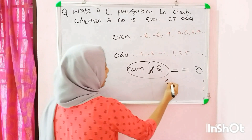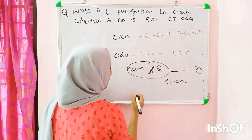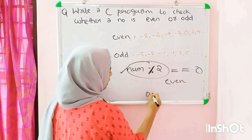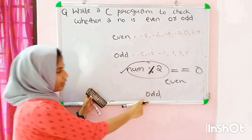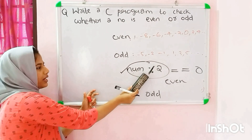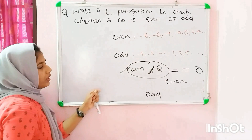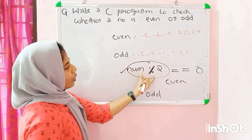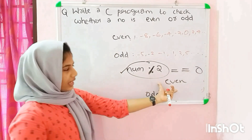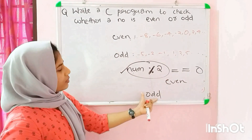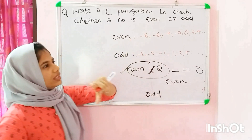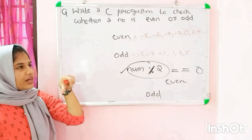We get the result using the modulo operator. If the remainder is zero, it is even. If not, it means odd. We know how to check whether every number is odd or even.